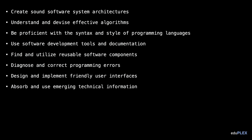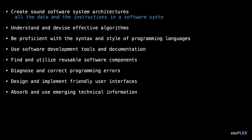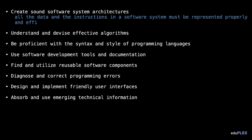Software engineers are basically creating their own worlds that are powered by computer systems. These worlds need some sort of architecture in order to function properly, and as a result, the software engineer has to make sure that all the data and all the instructions in a software system are represented properly and efficiently.